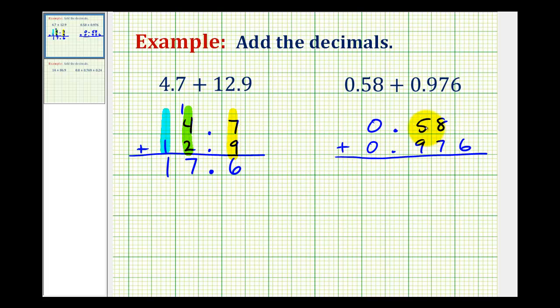Again notice how we have the corresponding place values lined up. If we want we can add a zero here in the thousandths place value for this first decimal so things line up nicely. We'll bring the decimal down into our sum and add as we normally would.